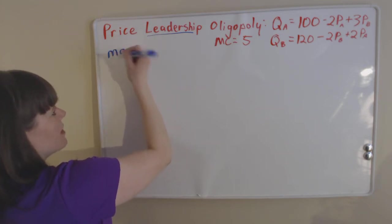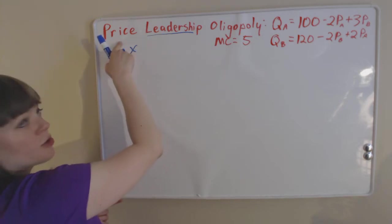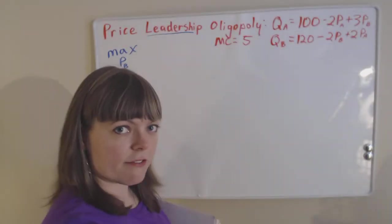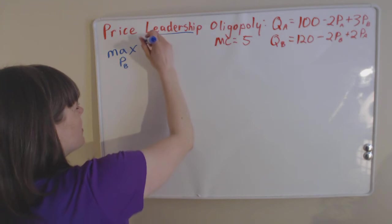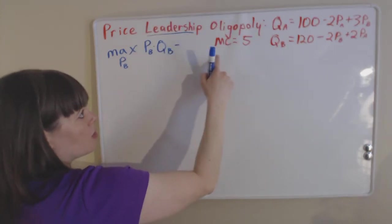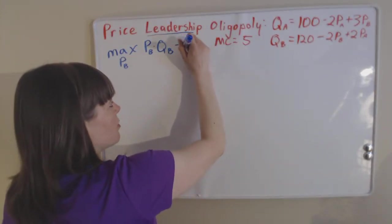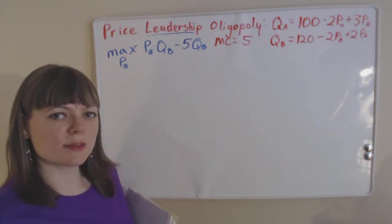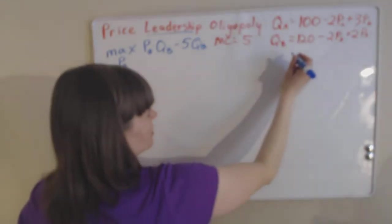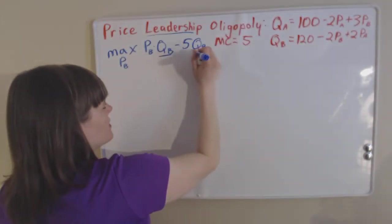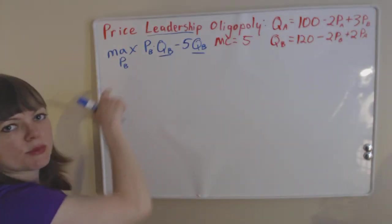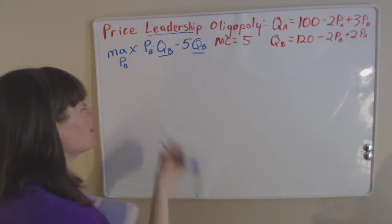I always like to set up the simplest possible form of our maximization problem. We know the choice variable will be price — specifically the price of firm B, since we're starting with firm B, the second firm to move, using backwards induction. Profit is just the price of firm B times quantity of firm B (that's revenue) minus total costs, which are the $5 cost per unit times the quantity of firm B. Then our next step is to plug in the demand function for quantities, so that only prices remain — which makes sense since price is our choice variable.